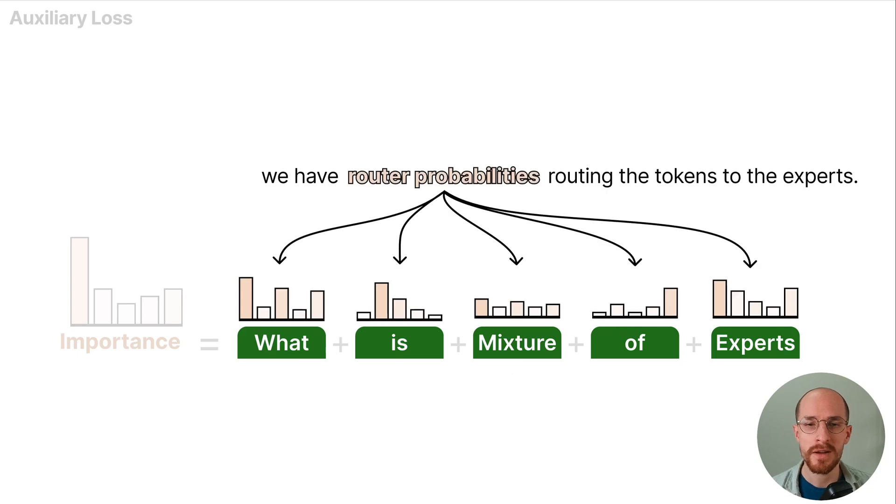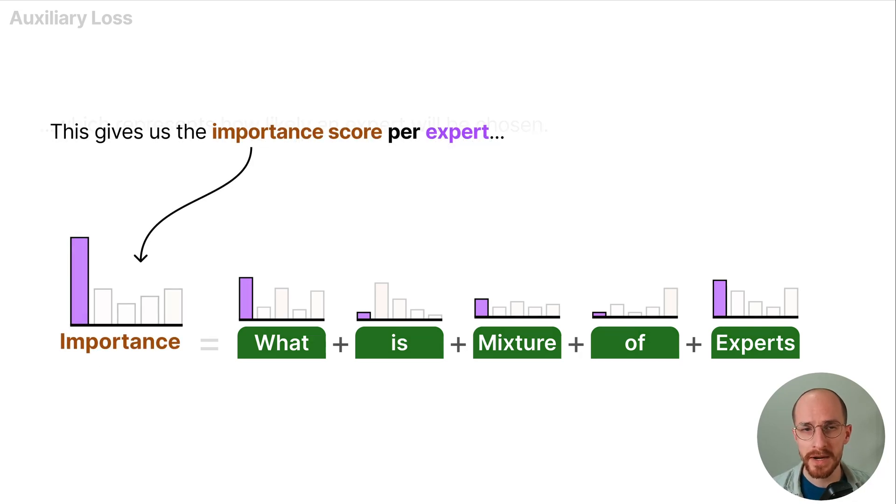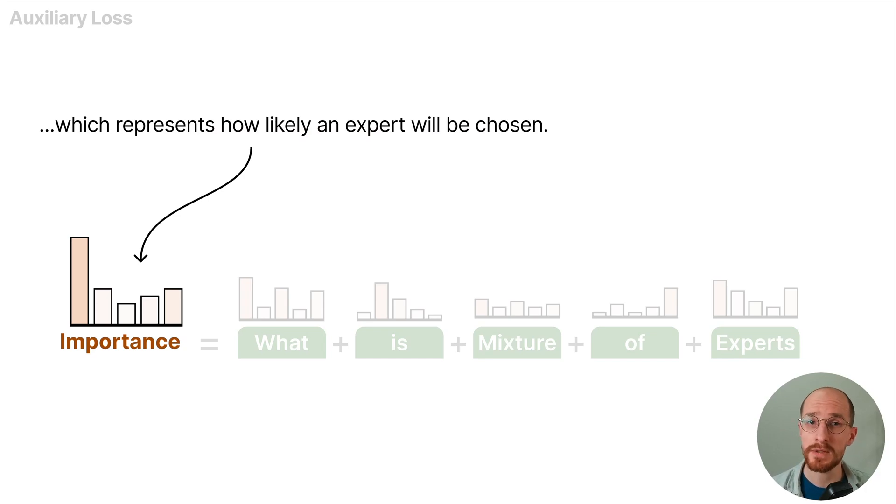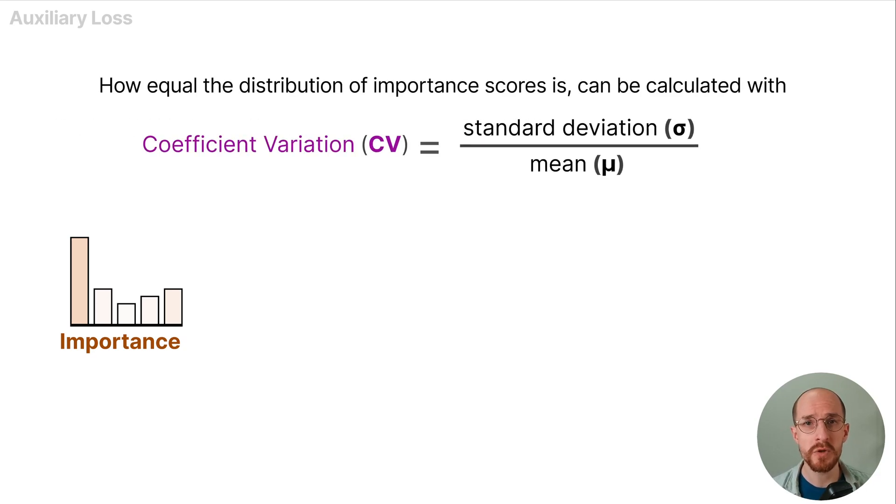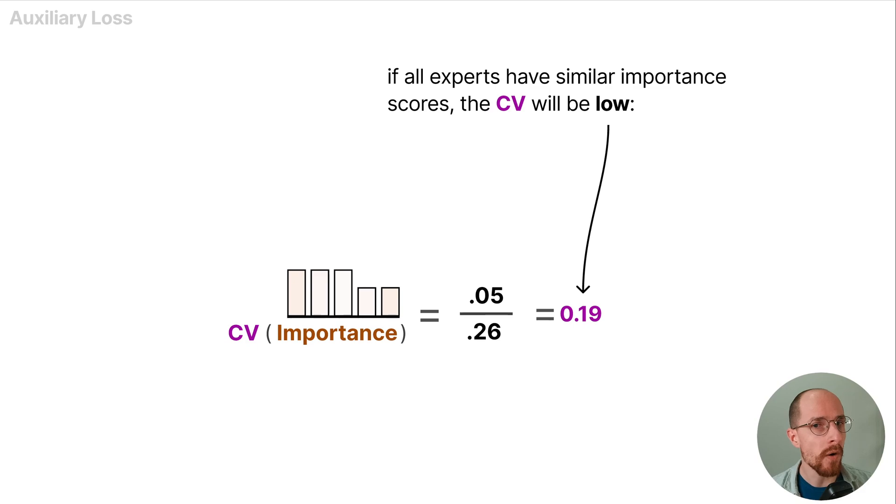Imagine that for each input token we have router probabilities that route the tokens to the experts. The first component of this auxiliary loss is to sum the router values per expert. This gives us the importance score per expert which represents how likely an expert will be chosen. How equal the distribution of importance scores is can be calculated with the coefficient of variation, which is simply the standard deviation divided by the mean of these importance scores. If there are a lot of differences in importance scores the CV will be high. If all experts have similar importance scores the CV will be low.